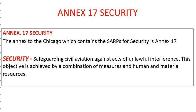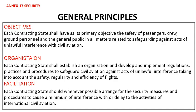Annex 17 is the annex to the Chicago Convention which contains the standards and recommended practices for security. Security is defined as the safeguarding of civil aviation against acts of unlawful interference. This objective is achieved by a combination of measures and human and material resources.